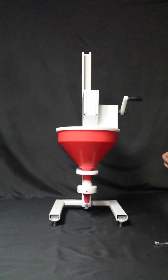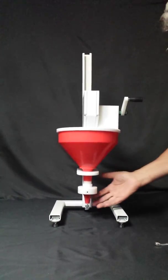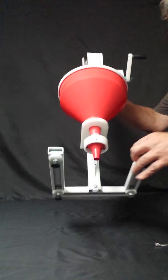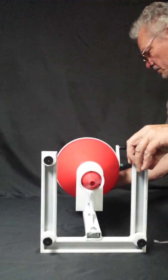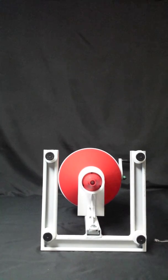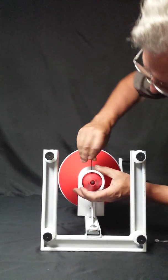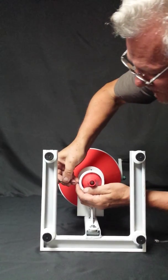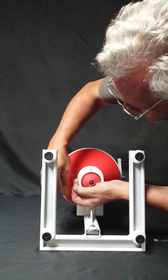The first step in raising this up is to remove this funnel and remove the spinner plate underneath of it. So to remove the funnel, you loosen these three set screws with a 3/32 Allen wrench.